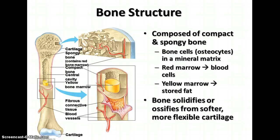Bones are made of two main parts: compact bone, which is the really hard part, and spongy bone. Bone cells called osteocytes are embedded in a mineral matrix, and the minerals involved are mostly calcium compounds. There are two kinds of marrow found in bones: red marrow, found in the spongy bone, which produces red blood cells and some white blood cells including B cells; and yellow marrow, which is stored fat in the bones. Bones ossify from softer, more flexible cartilage through deposition of calcium compounds within the cartilage matrix.